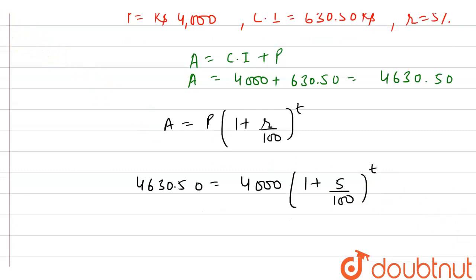If we solve this, the 5 gets cancelled with 100 to give 20. We can write it as 4630.50 divided by 4000 equals (21 by 20) raised to power T.